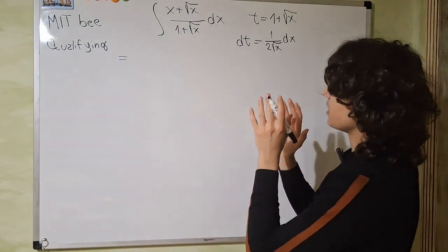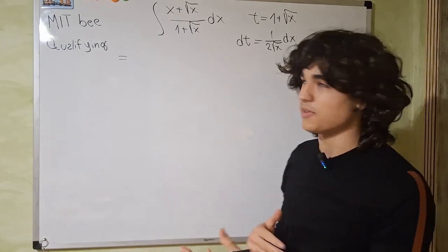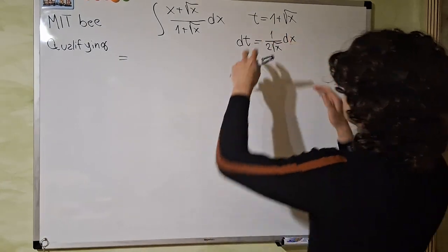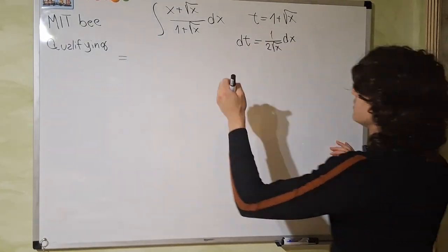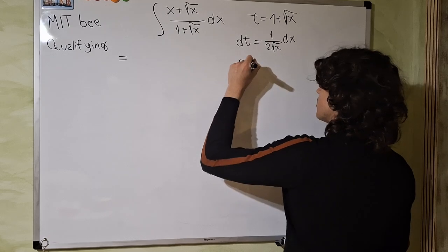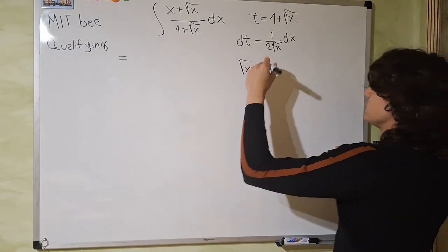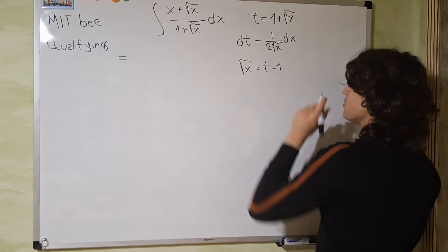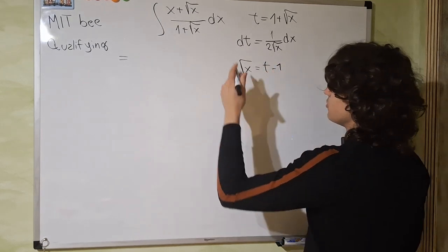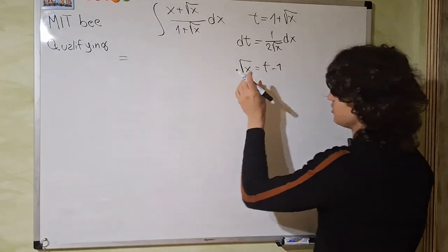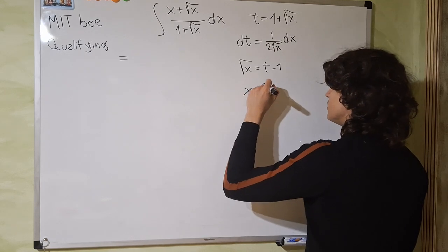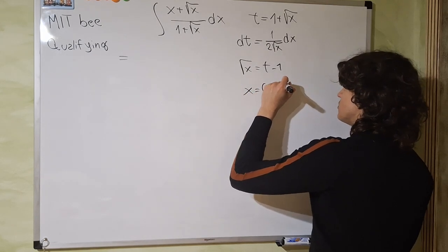And we can also replace x and square root of x in terms of t since we have this relationship here between the two. So the square root of x equals, just bring the one to the other side, t minus 1. And if we want x, we just square both sides. We get x equals t minus 1 squared.